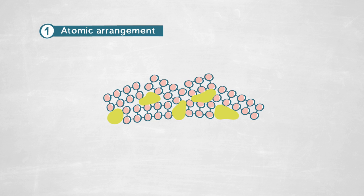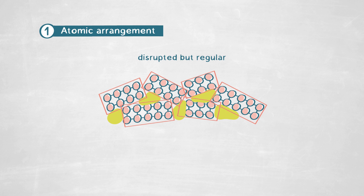When we looked at the atomic structure of these interfaces, their atomic arrangement was completely disrupted compared to the adjoining crystals. But we found there is indeed a regular arrangement of the atoms. A grain boundary region is composed like Lego blocks — each block is what we call a structural unit, and within this unit the atoms adopt a certain geometric arrangement.